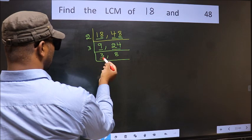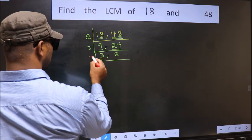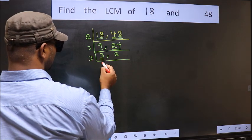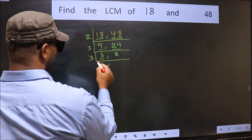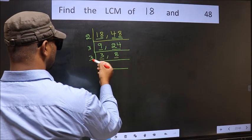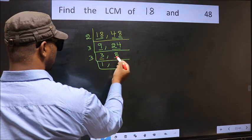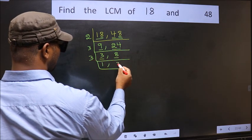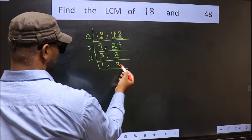Now here we have 3. 3 is a prime number, so 3 ones 3. The other number 8 is not divisible by 3, so we write it down as it is.